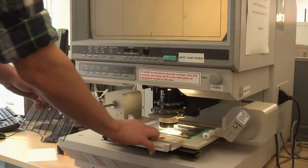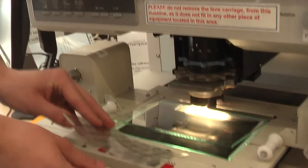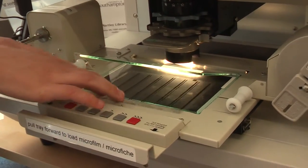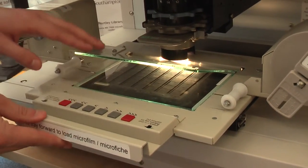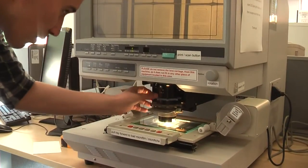You can also use the machines for microfiche. These are microfilms but on a single plastic sheet. To use them, simply pull out the tray and place the fiche upside down and facing towards you under the glass. Then just push it back under the microscope and it should appear on the screen.